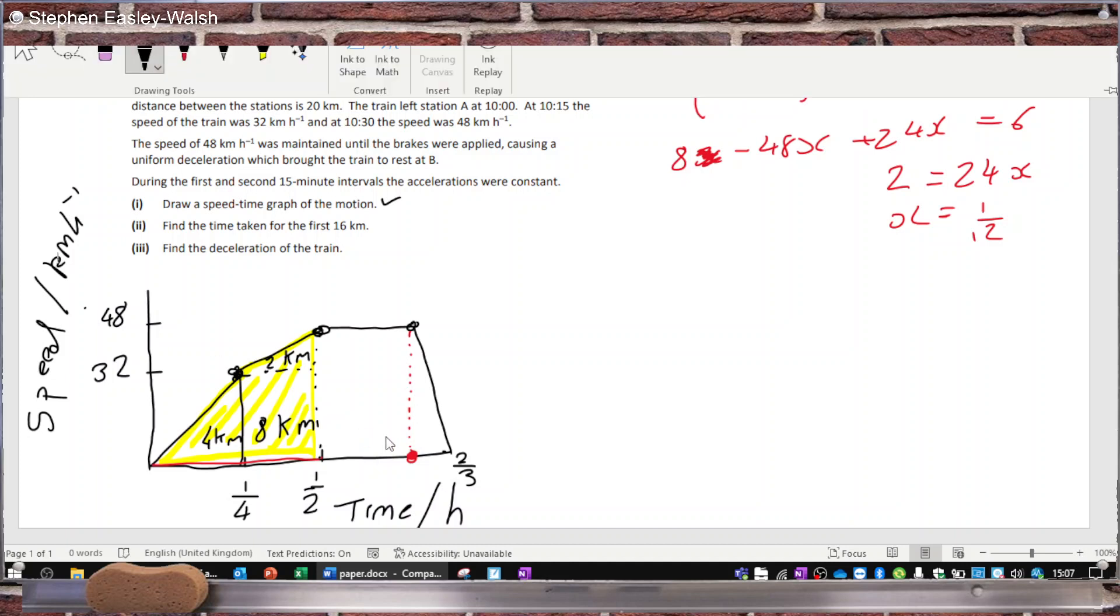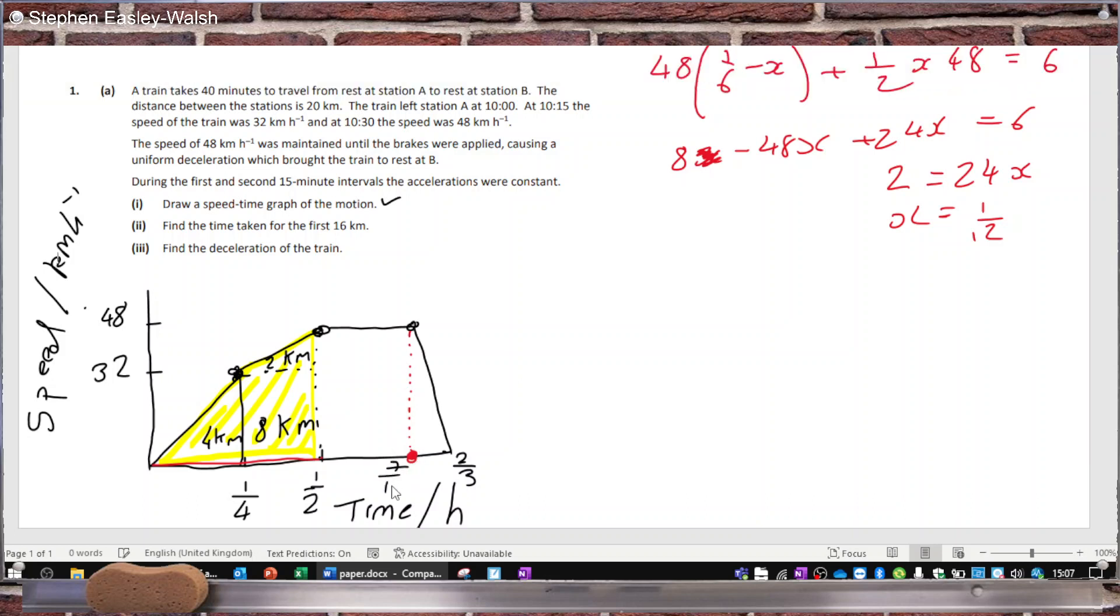Okay, so as I was saying, this takes us up to 7 twelfths of an hour. But the width here, although it doesn't look like it, they're both 1 twelfth of an hour wide. So, 1/12 times 48 is 4 kilometers.